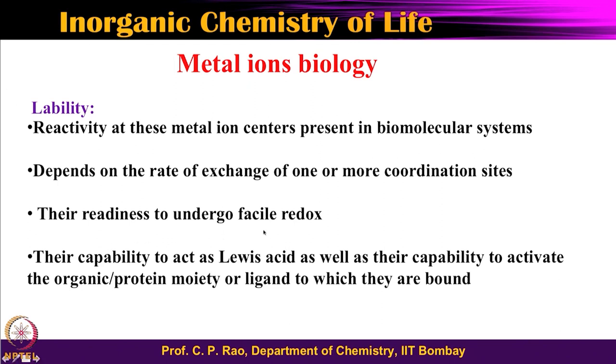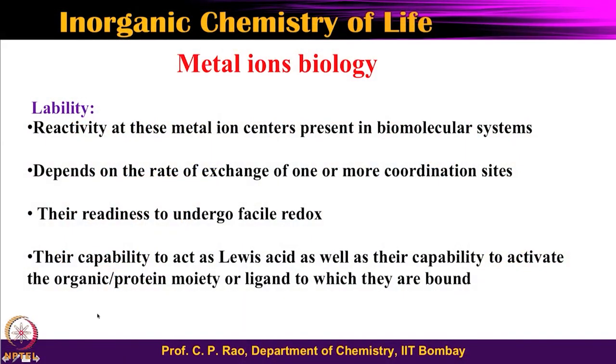During reactions in metalloenzymes, the metal ion often undergoes redox — it can be oxidized or reduced. The question is how well the protein or enzyme environment favors this redox process. Can the enzyme allow the next higher or lower oxidation state? If both are allowed, you have a facile redox process. The capability to act as a Lewis acid and activate the organic moiety — whether that is the protein itself or a small molecule binding to the metal center — is also important.